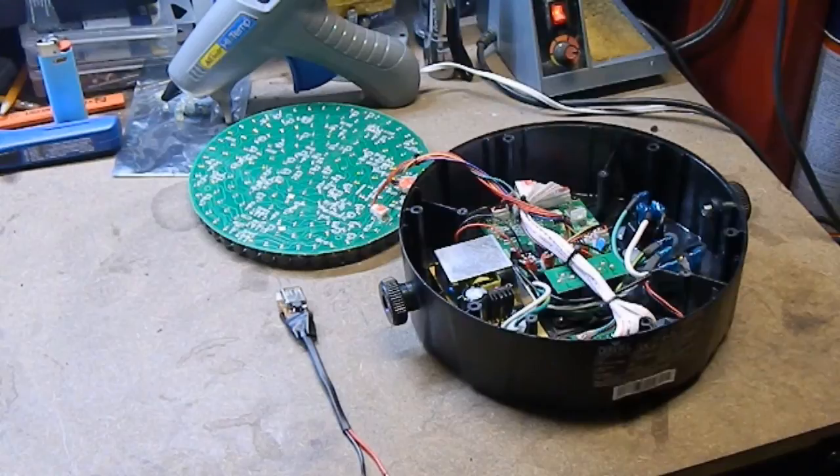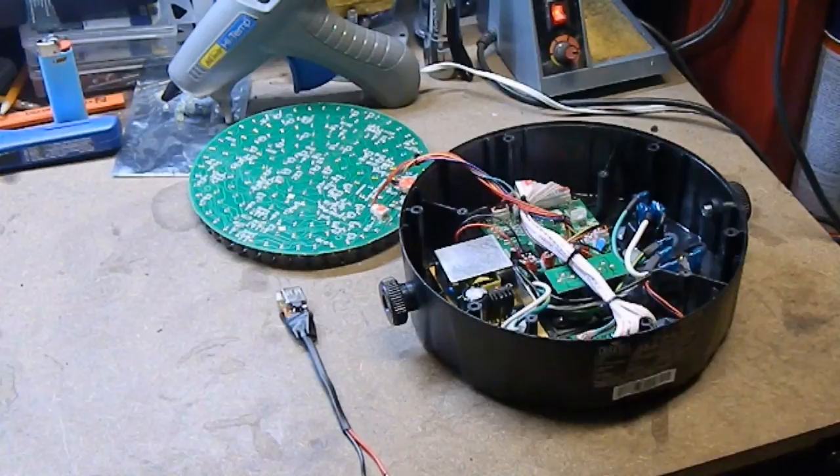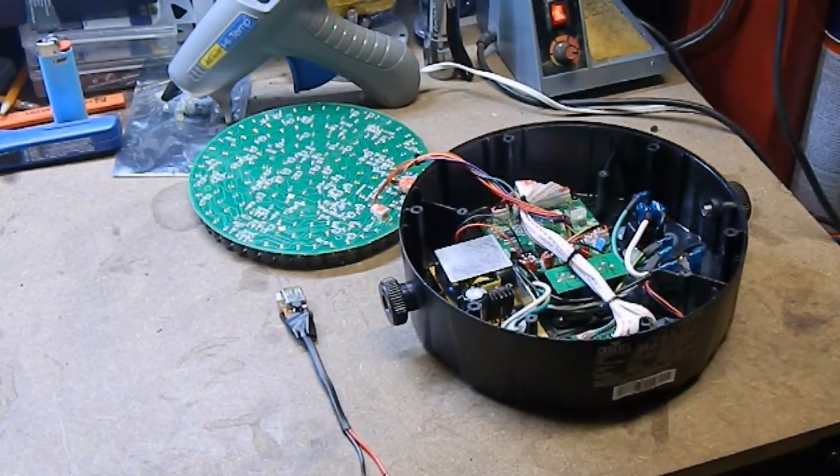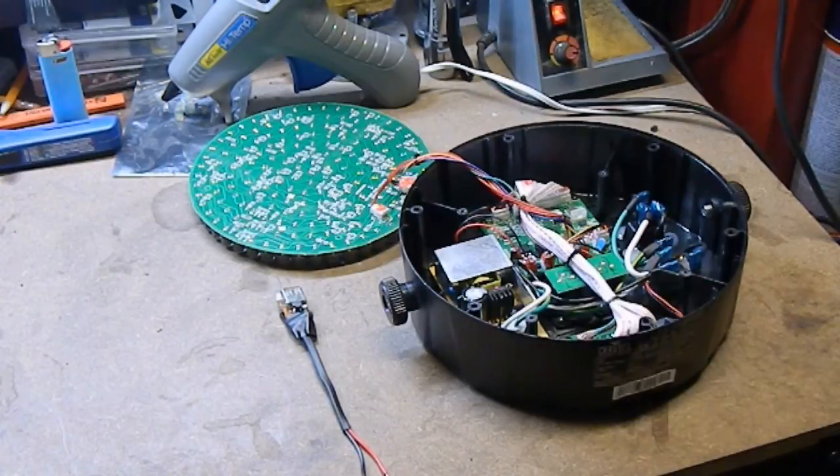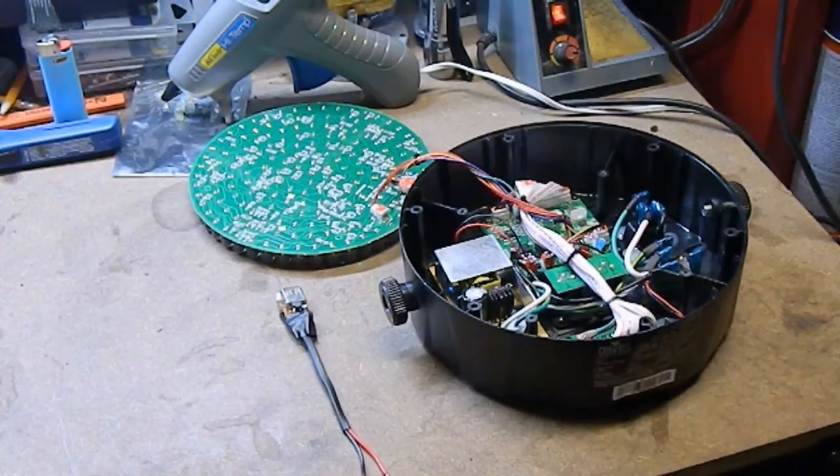Hi guys, this is Sean from UDJ. We're back with part two on how to upgrade a Chauvet Slim Par 64 RGBA to a permanent wireless solution. This is our solution for this. This will void your warranty. If you have not watched part one, please click the link below and we'll show you what we've done so far to this point. So let's get started.